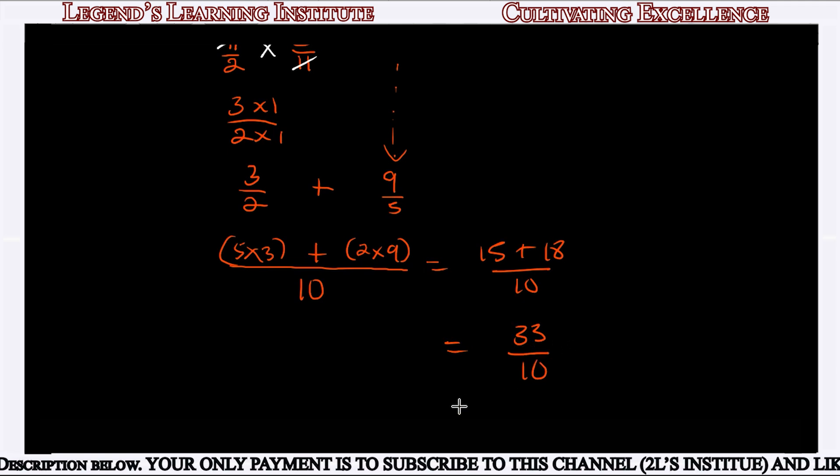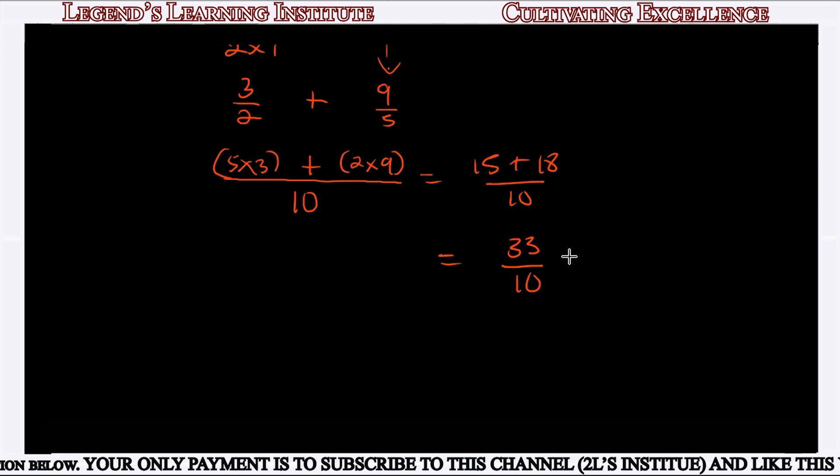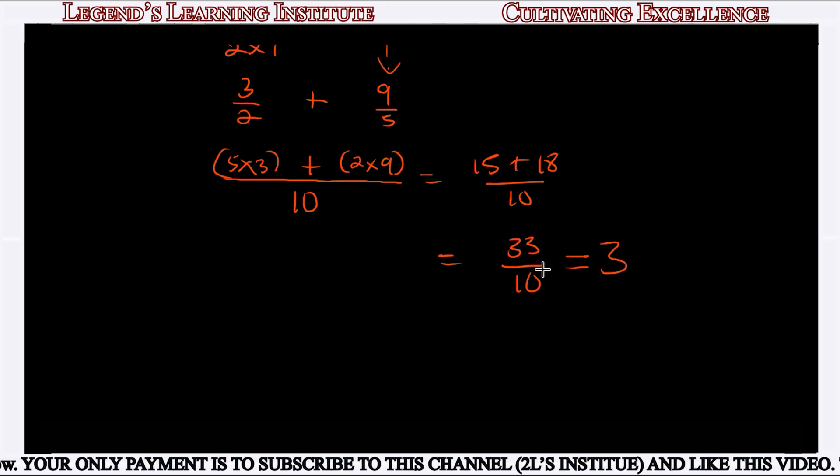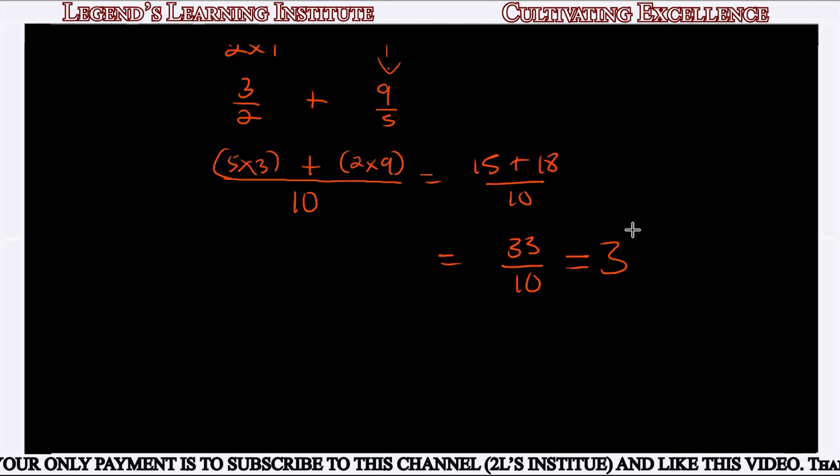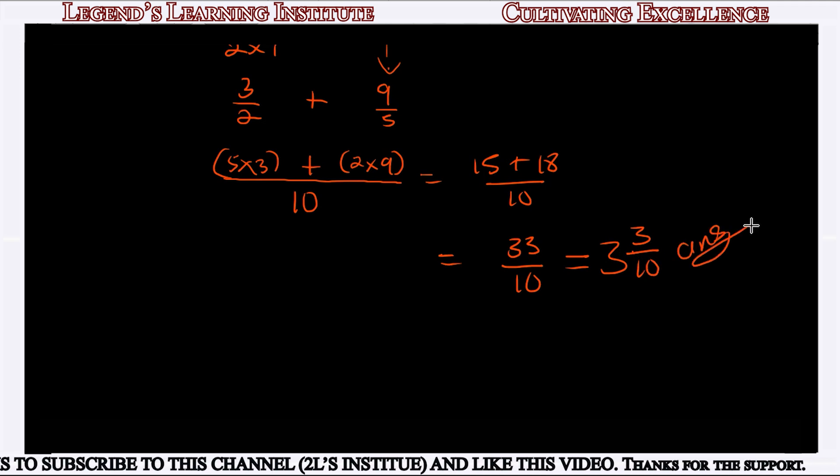Now we convert the improper fraction to a mixed number. 10 goes into 33 three times with remainder 3, so we get 3 and 3/10. That's our answer for part 1 of A.